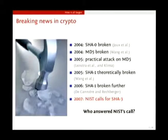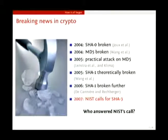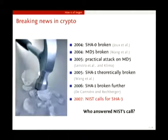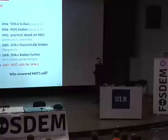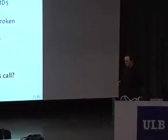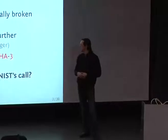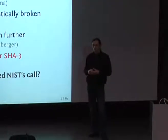And recently there have been some breaking news in crypto — and breaking is usually bad for crypto. In 2005, and starting before, we had bad news about MD5, which has been broken and then broken practically, meaning that we can really produce collisions with maybe an expensive computer. And we had the same with SHA-1, where today we only have a theoretical break, so it's not really practically broken, but we might think that in the future it will be broken practically. And the problem is that SHA-2, the next variant of SHA-1, is very similar to SHA-1 and to MD5.